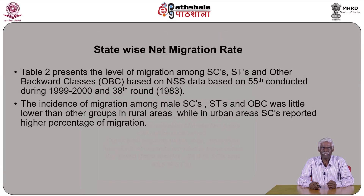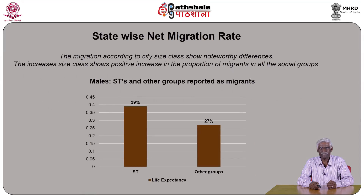The table also presents the level of migration among Scheduled Castes, Scheduled Tribes, and Other Backward Classes (OBCs) based on National Sample Survey data from the 55th round (1999–2000) and the 38th round (1983). The incidence of migration among male SCs, STs, and OBCs was slightly lower than other groups in rural areas, while in urban areas Scheduled Castes reported a higher percentage of migration.